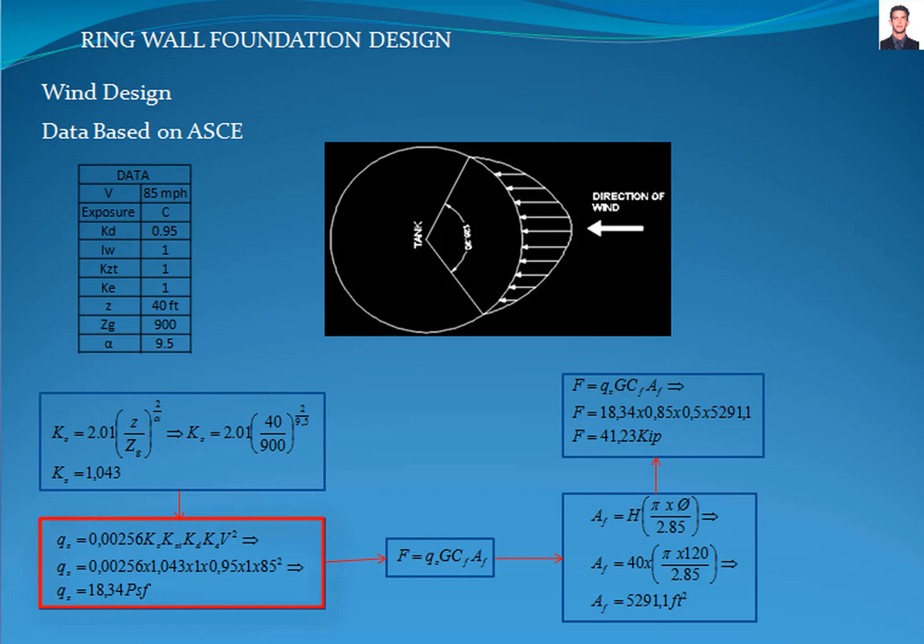The next step is to calculate the velocity pressure Qc with the equation of section 26.10.2 of the American Society Civil Engineers standard, where Kc, KCT, KE, KD, and V were already defined. The result is 18.34 pounds per square foot.